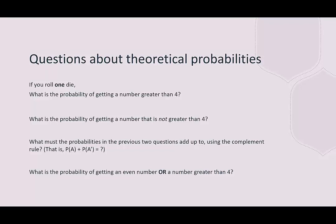Taking this up a notch — if you roll one die, what is the probability of getting a number greater than four? Listing the sample space one more time: greater than four, the only possibilities are five and six. P(roll > 4): there are two successes, two favorable outcomes, out of six. That would be one out of three, which is 0.3 repeating, or 33 and one-third percent.